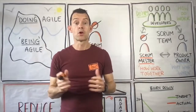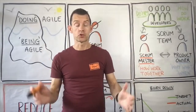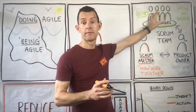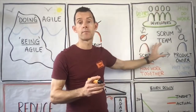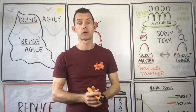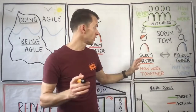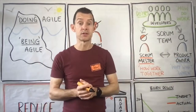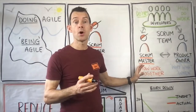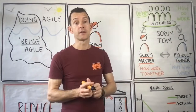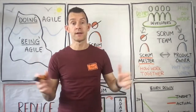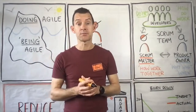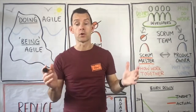Let's talk about the role of the Scrum Master. We know there are three roles in Scrum: the developers, the Scrum Master, and the Product Owner. The Scrum Master's job is to help us work effectively in Scrum, to help the team work together to achieve fantastic outcomes.